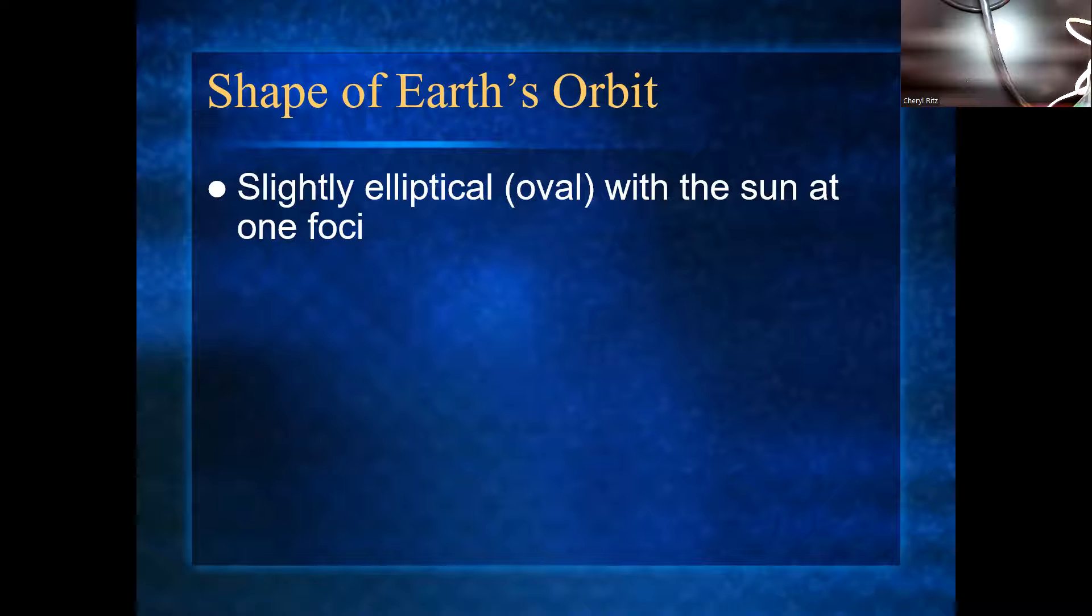So a foci is one of the centers of a circle, of an oval. By the way, a focus is one, and a foci is one. My sister has a focus. Okay, so a foci is one. If there's two of them, they're called focus. My mistake. So the sun is just at one of them.